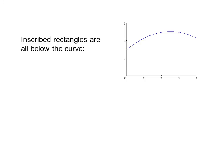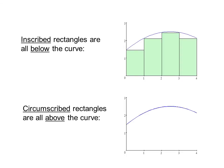A little vocabulary. Inscribed rectangles are all below the curve. Our book does not use this term, but the AP exam does, so you should be aware of it. Circumscribed rectangles are all above the curve. Like this.